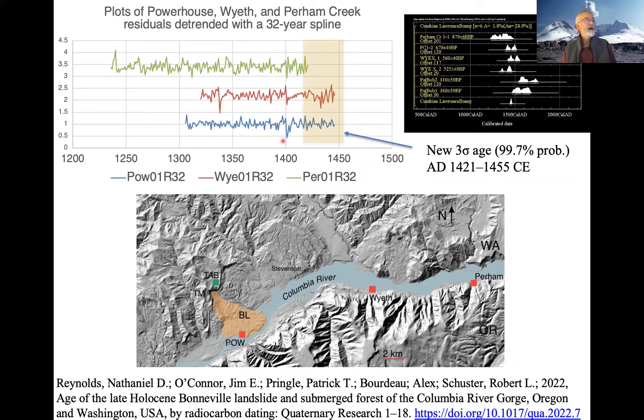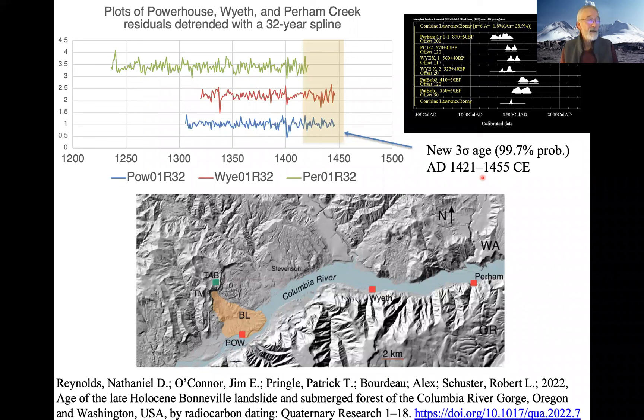We cross-dated the powerhouse tree, the Wyeth tree, and the Parham Creek tree together, then used wiggle matching on tiny pieces of wood spaced a known number of rings apart. This gave a very high-precision age—at 99.7% probability—of 1421 to 1455 AD for the Bonneville landslide samples. That is far better than the old-style carbon date of 700 years ago ±200.